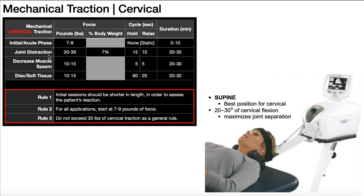For joint distraction, we can apply either 20 to 39 pounds of force or 7% of the individual's body weight. This is the first indication where we're going to use an intermittent type of traction cycle with hold and relax. The hold or traction is going to be for 15 seconds, and then we relax that traction off for 15 seconds, with a total treatment duration of 20 to 30 minutes.